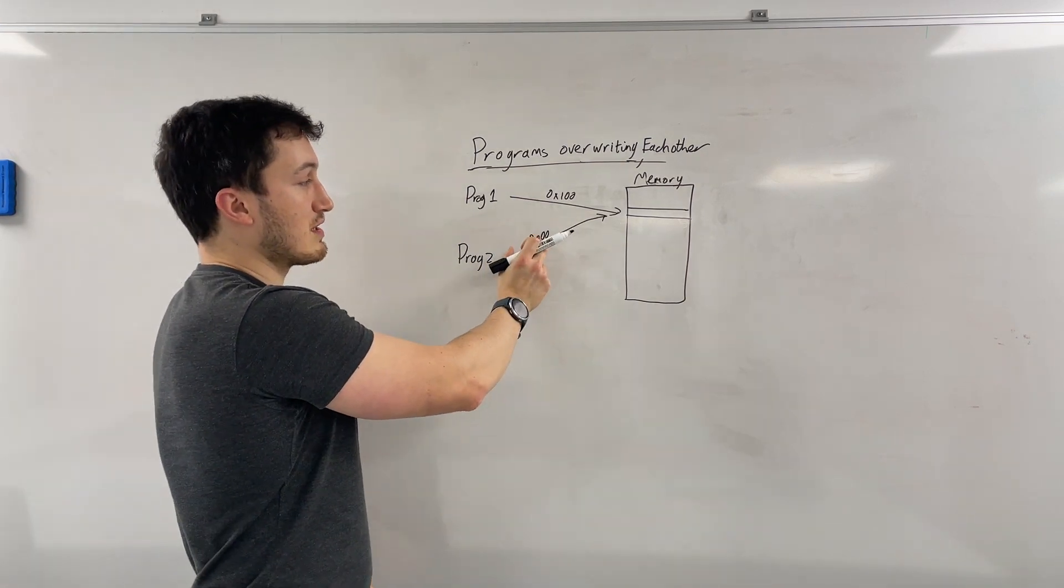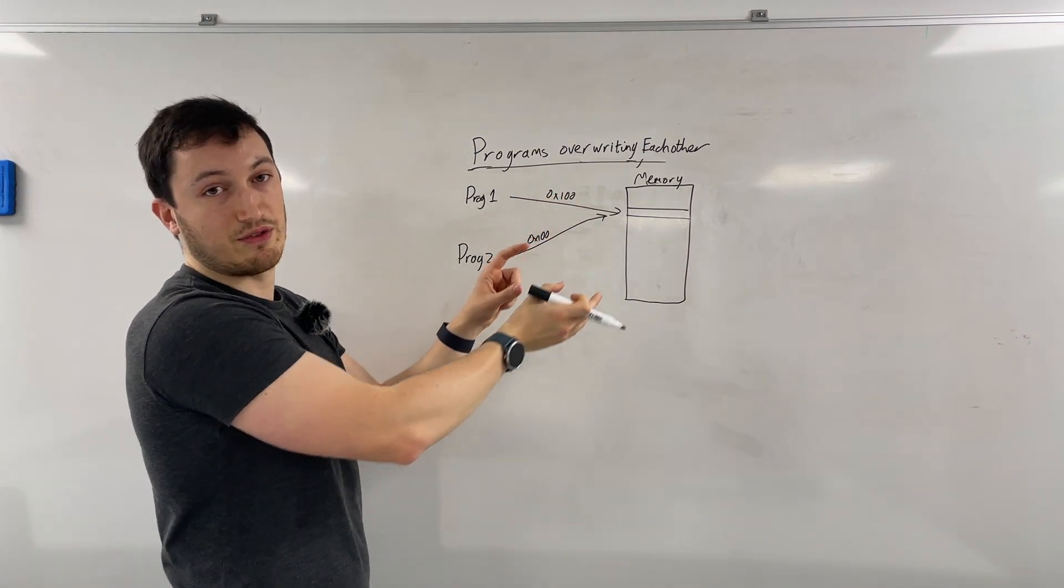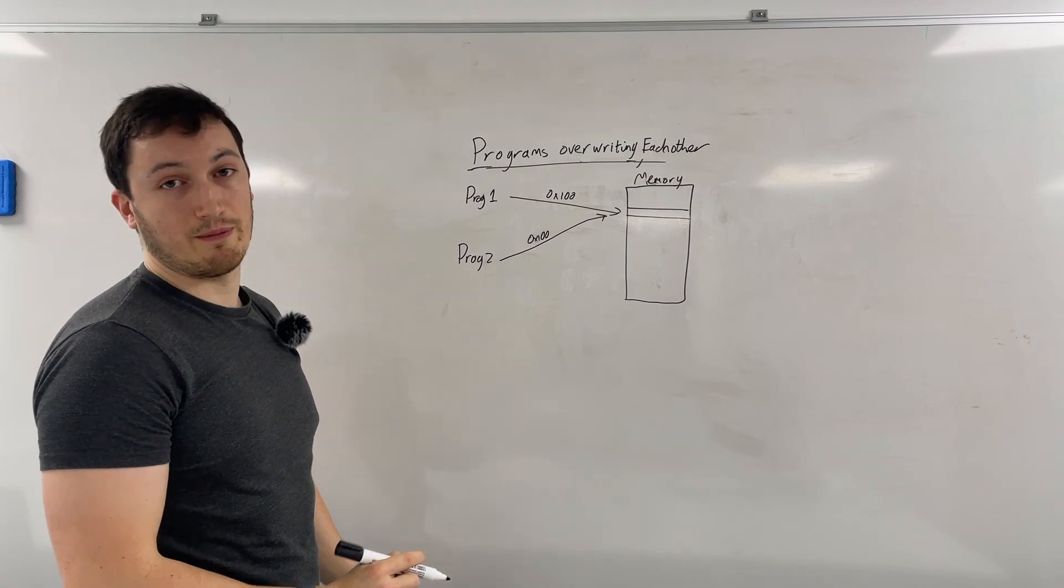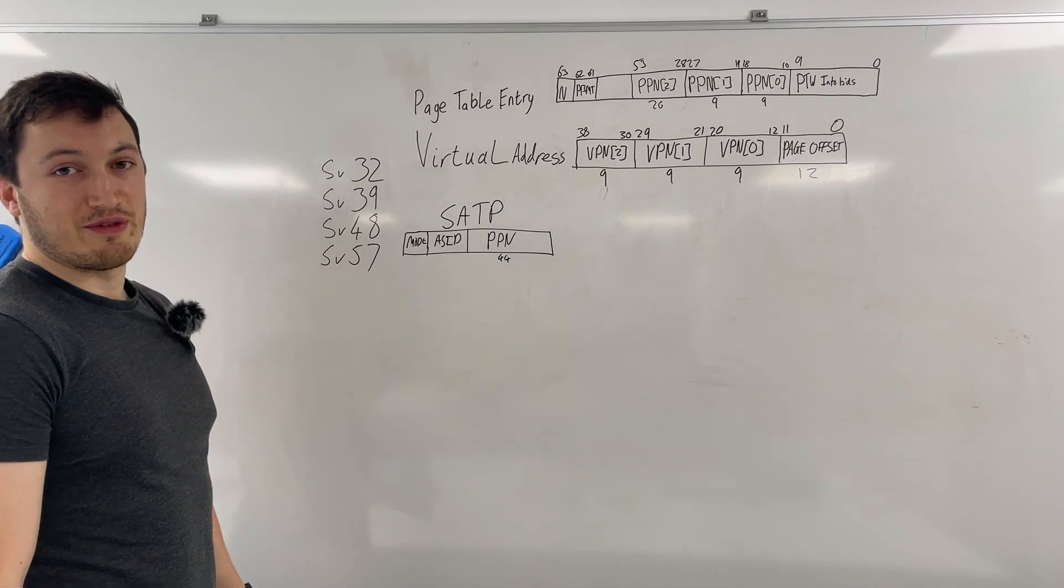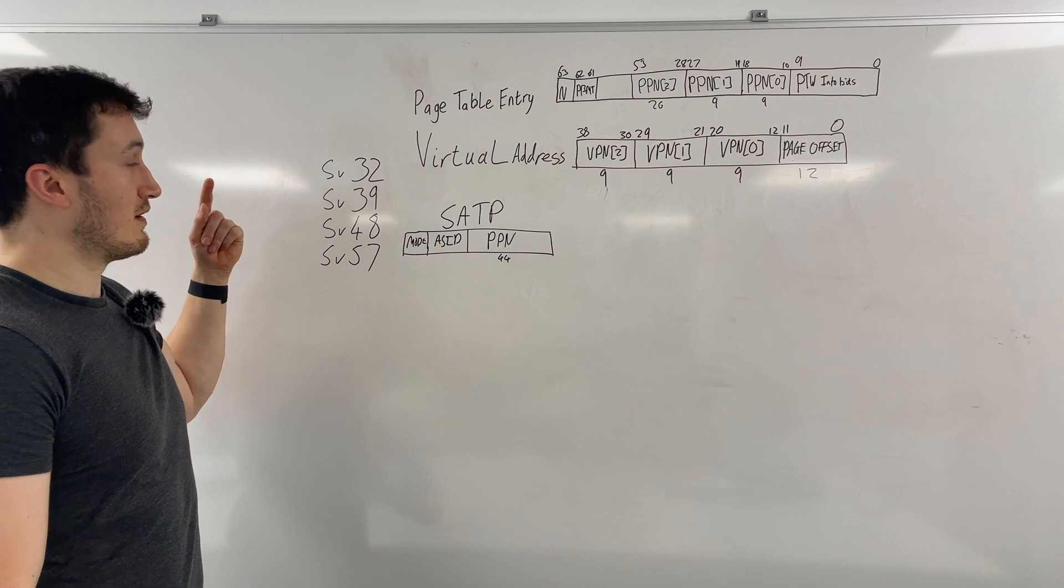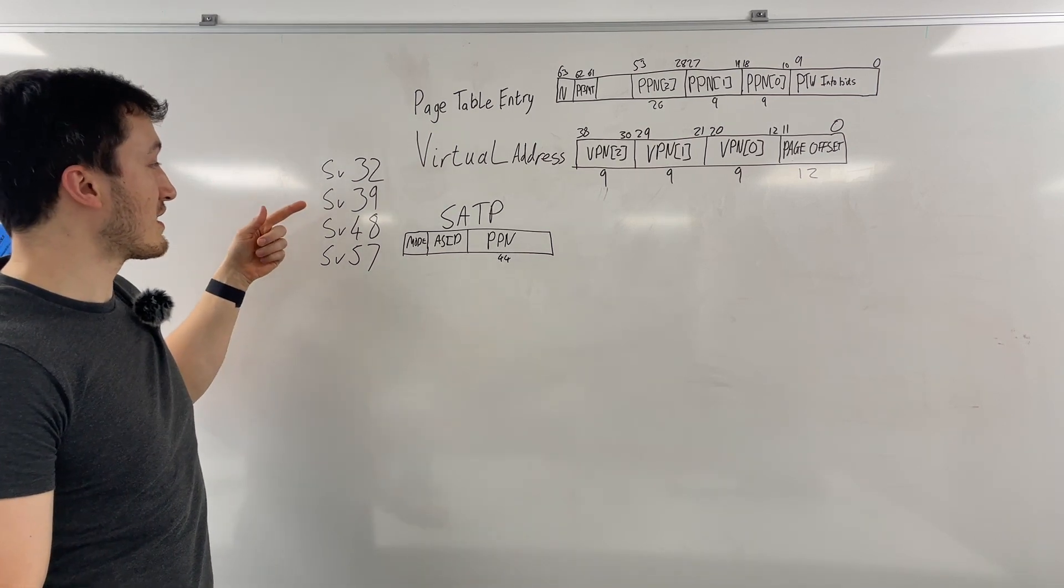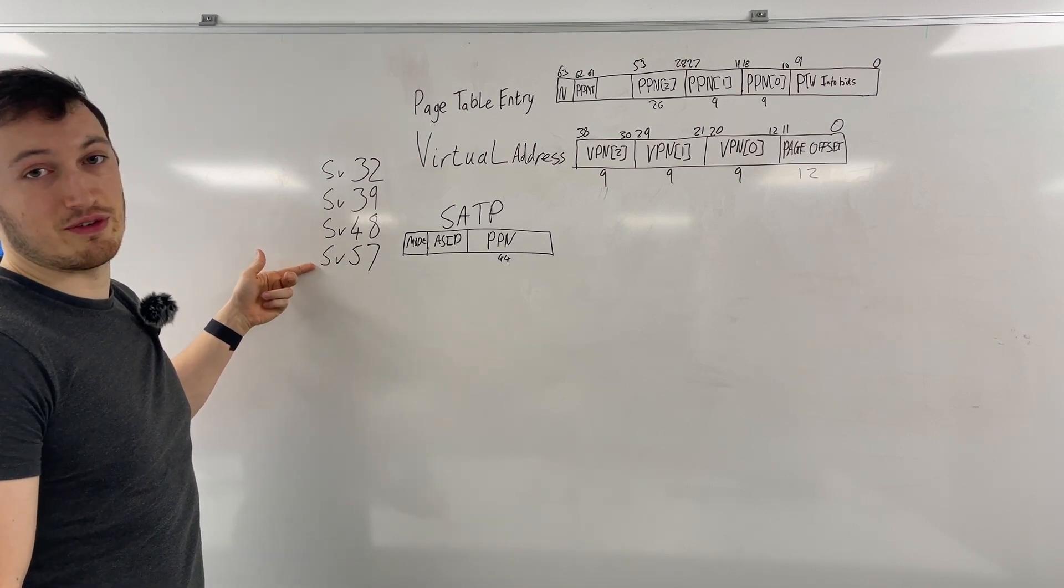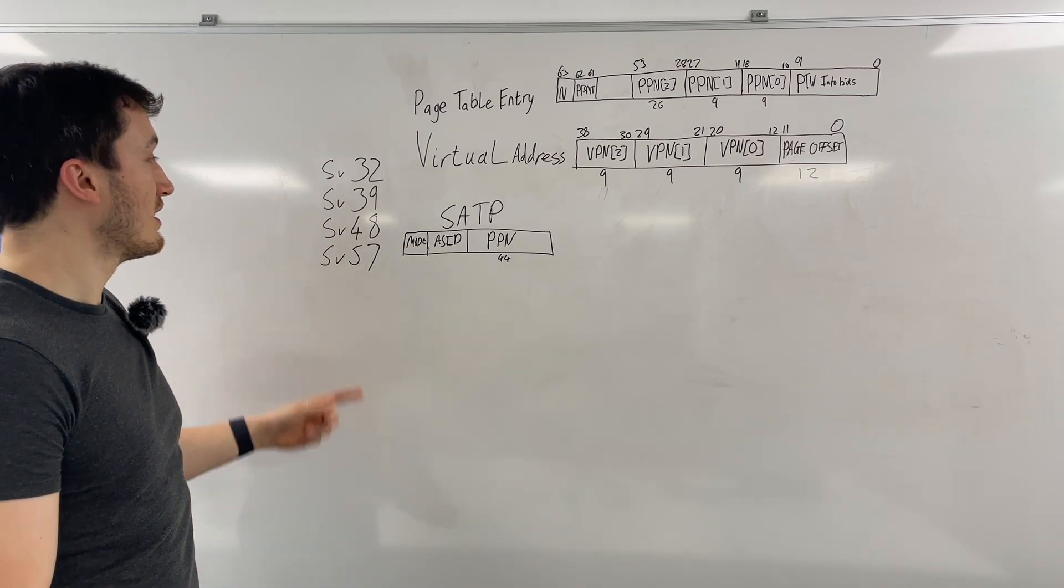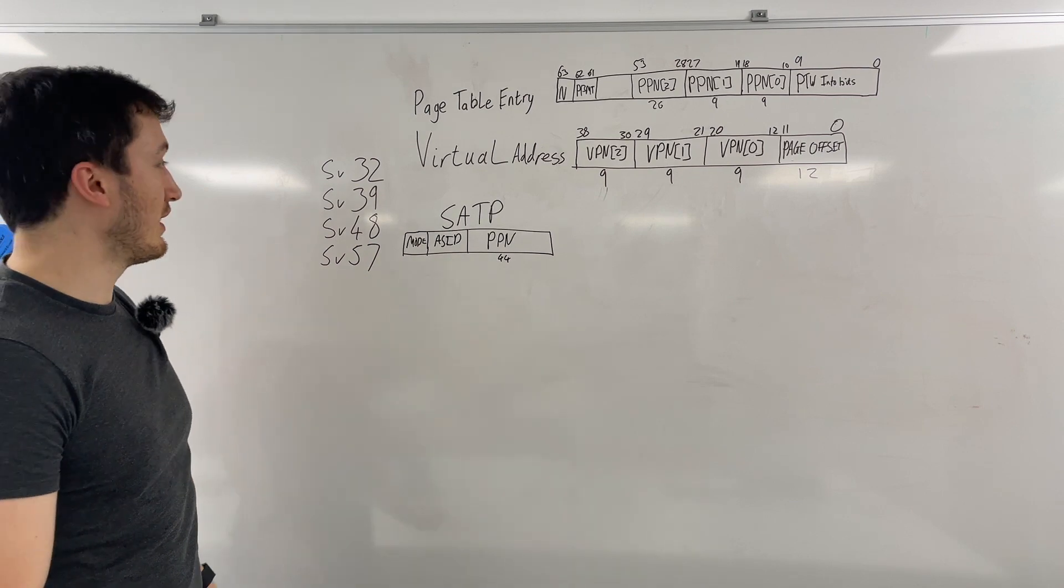So in RISC-V, we have four different virtual memory schemes. There's SV32, which is for XLEN32 machines. And then there's SV39, 48 and 57 for XLEN64 machines. Today, we'll just look at SV39.